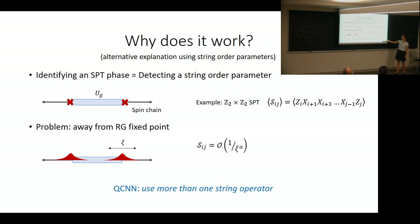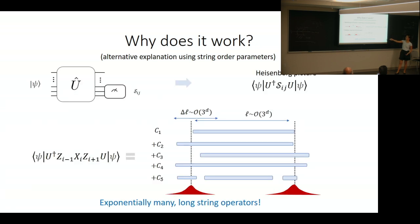What the QCNN does to avoid this is measure a weighted sum of more than one string order parameter. In particular, it measures a sum of exponentially many string order parameters with different weighted coefficients.